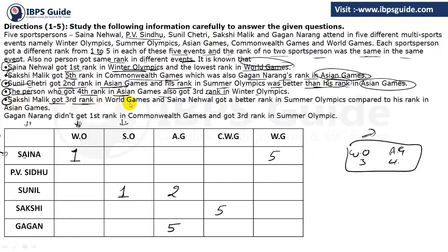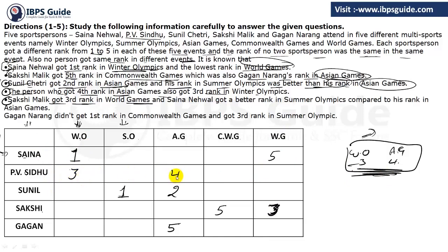Sakshi Malik got third rank in World Games. From this, we can fix the earlier information. The person with rank 4 in Asian Games and rank 3 in Winter Olympics can't be Sakshi Malik because Sakshi already has a rank assigned in World Games — she can't repeat ranks. So it must be PV Sindhu. Therefore, PV Sindhu got third rank in Winter Olympics and fourth rank in Asian Games.